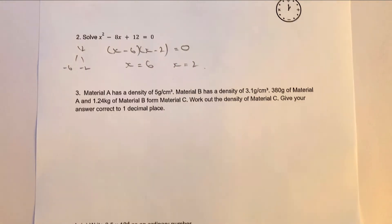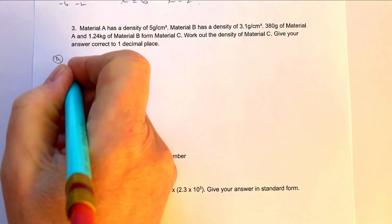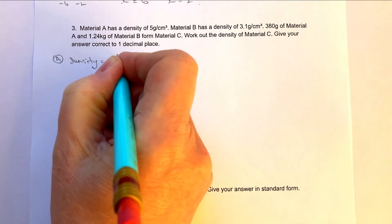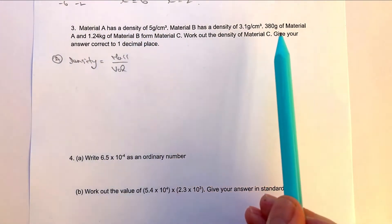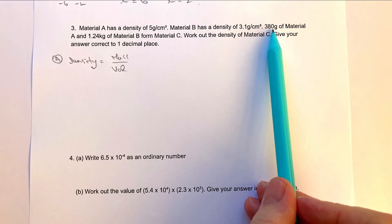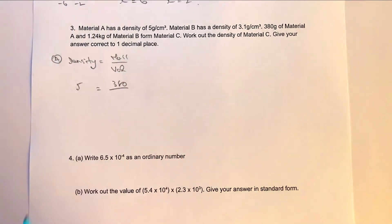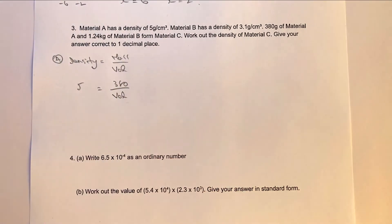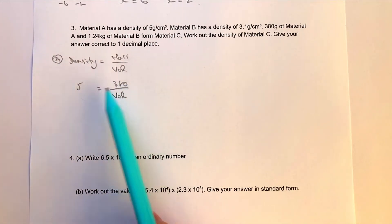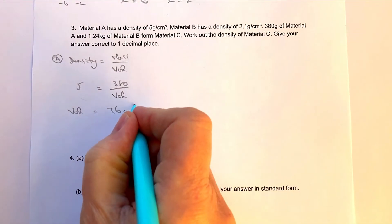Let's move on to question number three, a very typical density type question. We've got material A and material B which we're going to put together to make material C. Always write the formula: density equals mass over volume. Material A has a density of 5 and a mass of 380 grams. Check that units match — grams and grams. Dividing 380 by 5 gives us a volume of 76 centimetres cubed for material A.